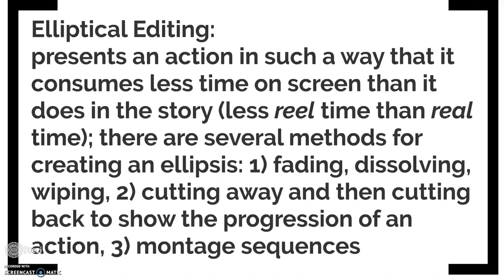Overlapping editing isn't incredibly common. What's more common is elliptical editing, which presents action in a way that takes less time on screen than it actually would take in the story — less real time than real time. Think about every movie you've ever seen: how often do you see a character making an entire meal, or sleeping for eight hours? We skip past those things because they're not interesting. We want to move on to the juicy parts where things actually happen. So you might show the character falling asleep and then waking up, but not the eight hours in the middle. This is what elliptical editing does — it cuts things out.